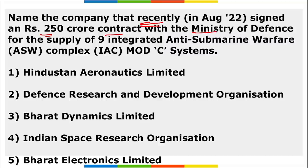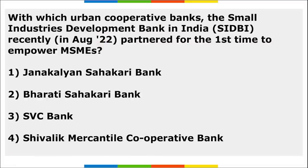Which company recently signed a ₹250 crore contract with the Ministry of Defence for the supply of nine Integrated Anti-Submarine Warfare Complex MOD C systems? It is Bharat Electronics Limited (BEL). The IACMS MOD C has been indigenously developed by BEL in association with DRDO and is an integrated anti-submarine warfare system for all surface ships of the Indian Navy.